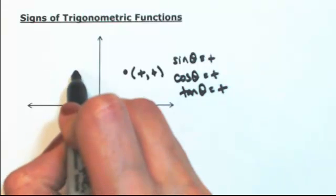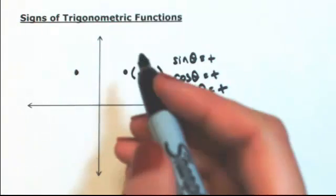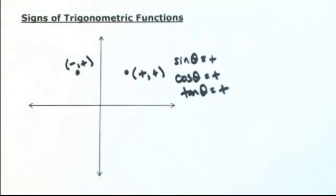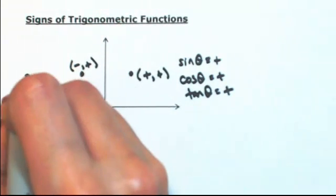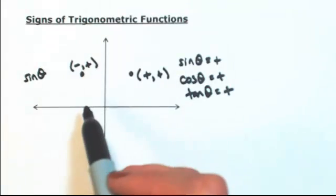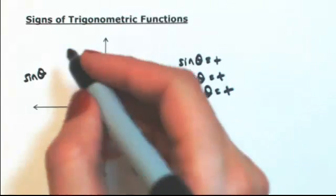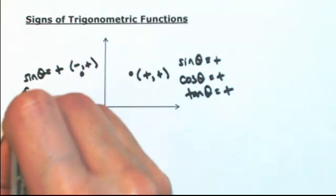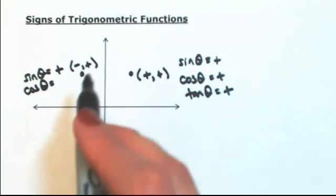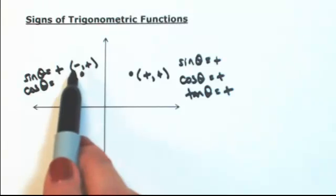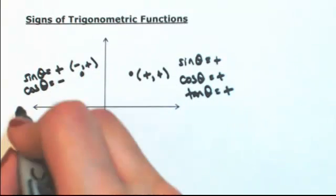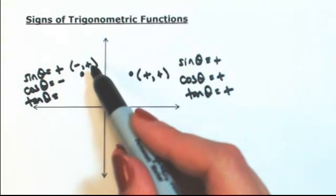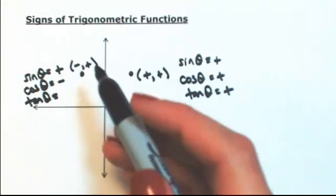If we take a point on the terminal side of an angle in the second quadrant, x would be negative and y would be positive. So the sine of an angle in the second quadrant — opposite over hypotenuse — opposite is positive, hypotenuse is always positive, so sine is positive. Cosine of the angle is the adjacent, negative over hypotenuse, which is positive, so cosine is negative. Tangent is opposite over adjacent, positive over negative, so tangent is negative.